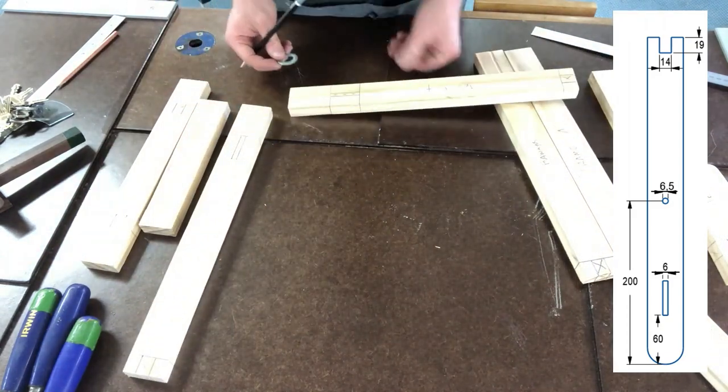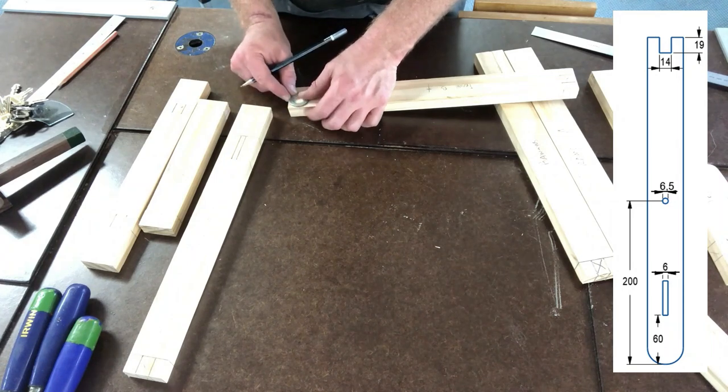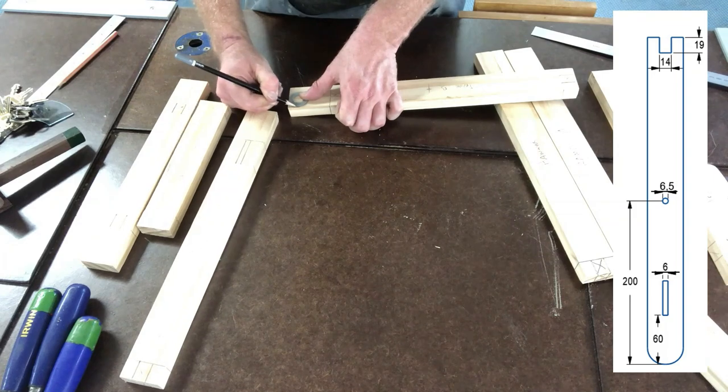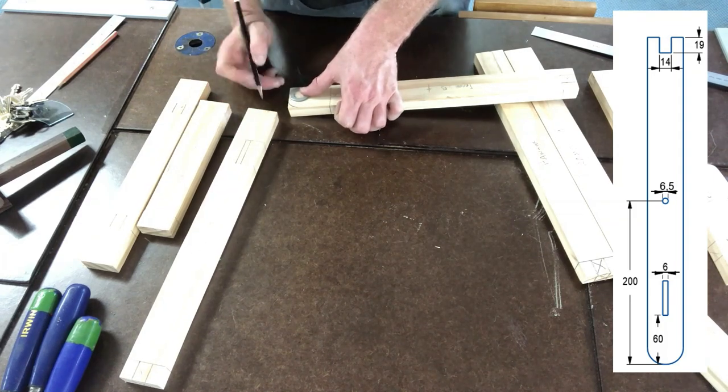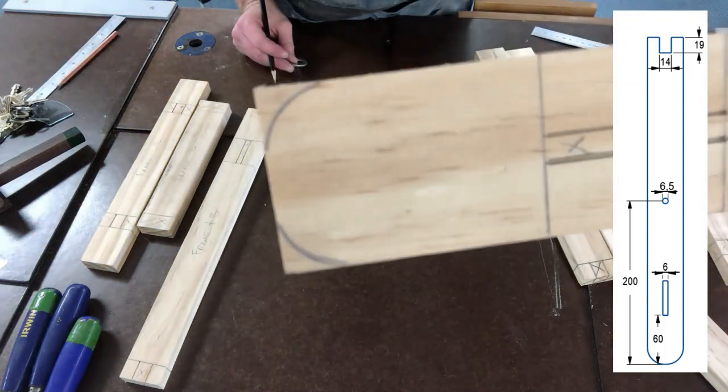We're going to place the washer over the corner with the radius sitting on the edges like so, and just trace around that radius. Do that for both corners and that should look like that.